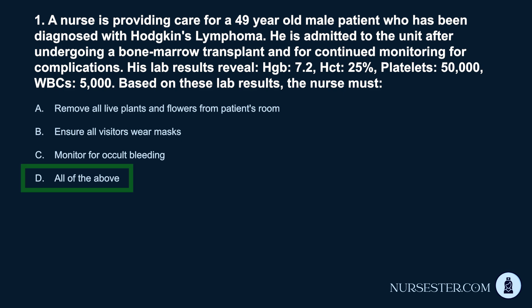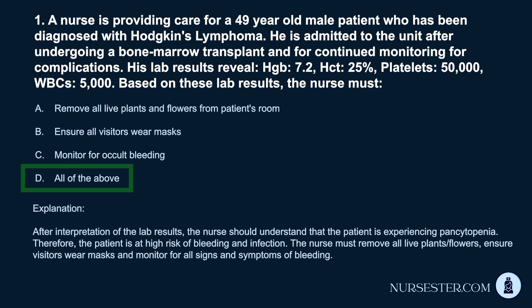Correct answer: d. All of the above. After interpretation of the lab results, the nurse should understand that the patient is experiencing pancytopenia. Therefore, the patient is at high risk of bleeding and infection. The nurse must remove all live plants and flowers, ensure visitors wear masks, and monitor for all signs and symptoms of bleeding.